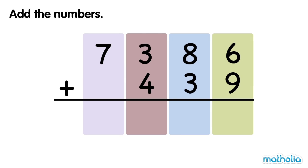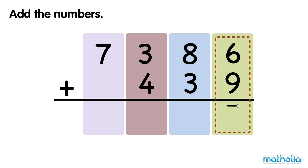Let's find 7386 plus 439. Start by adding the ones. 6 ones plus 9 ones equals 15 ones. We regroup 15 ones into 5 ones and 1 ten.